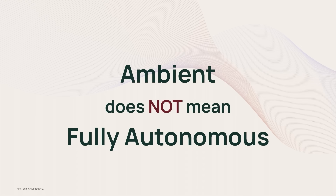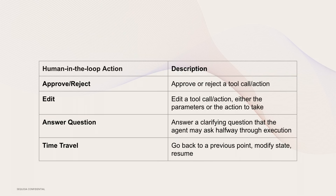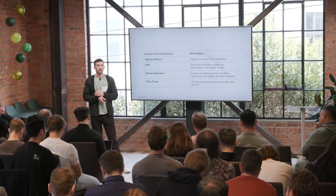One thing I really want to highlight: ambient does not mean fully autonomous. It's still really important to be able to interact with these agents. There are a few interaction patterns we see. One: approving or rejecting certain actions — for example, if an agent is potentially giving refunds, you'll want a human approving those at first. Two: editing the actions, so you can explicitly modify what the agent suggests. Three: answering questions the agent gets stuck on, just like a co-worker. Four: what we call time travel — going back to step ten of a hundred, modifying what it's doing, and giving feedback.